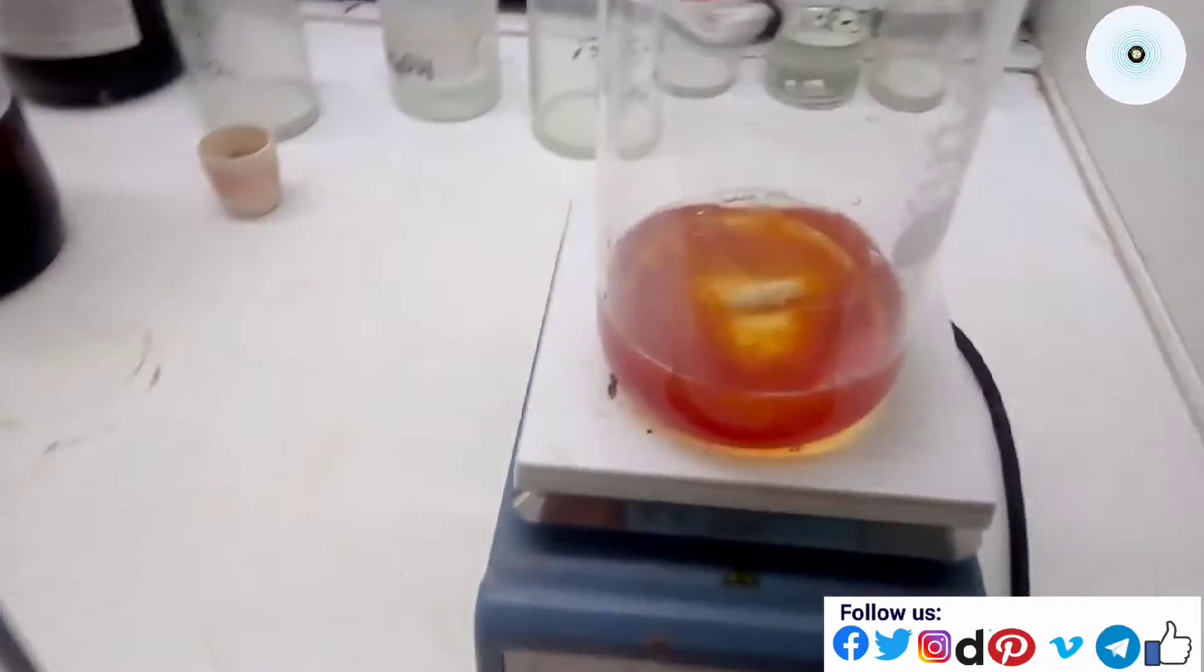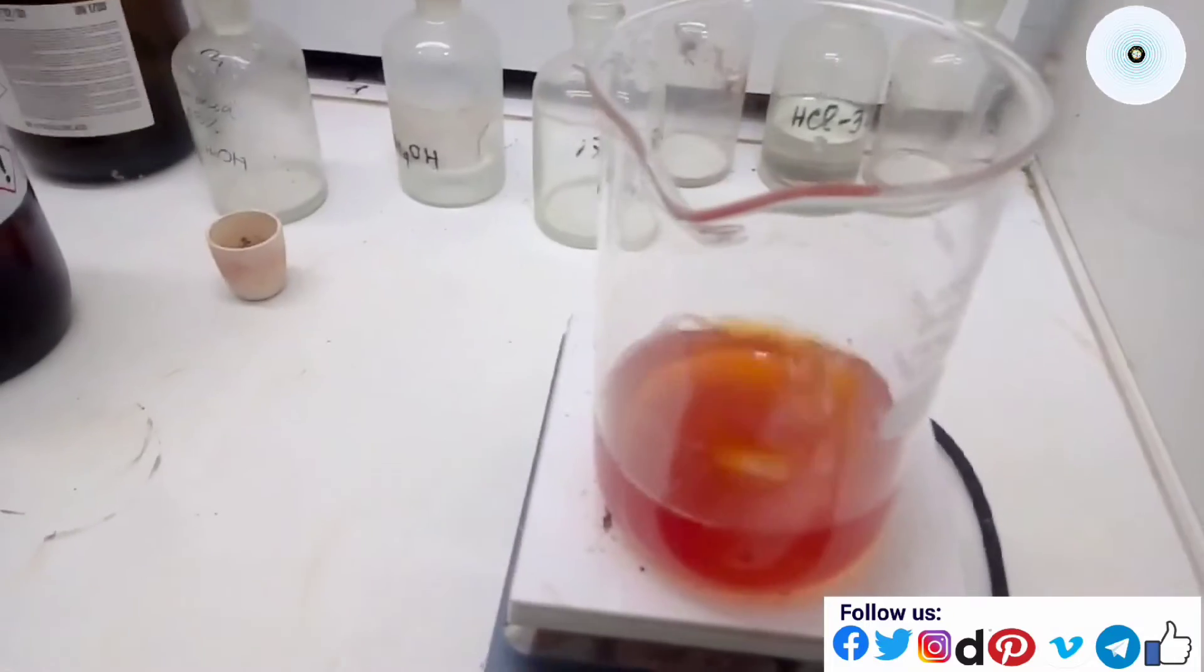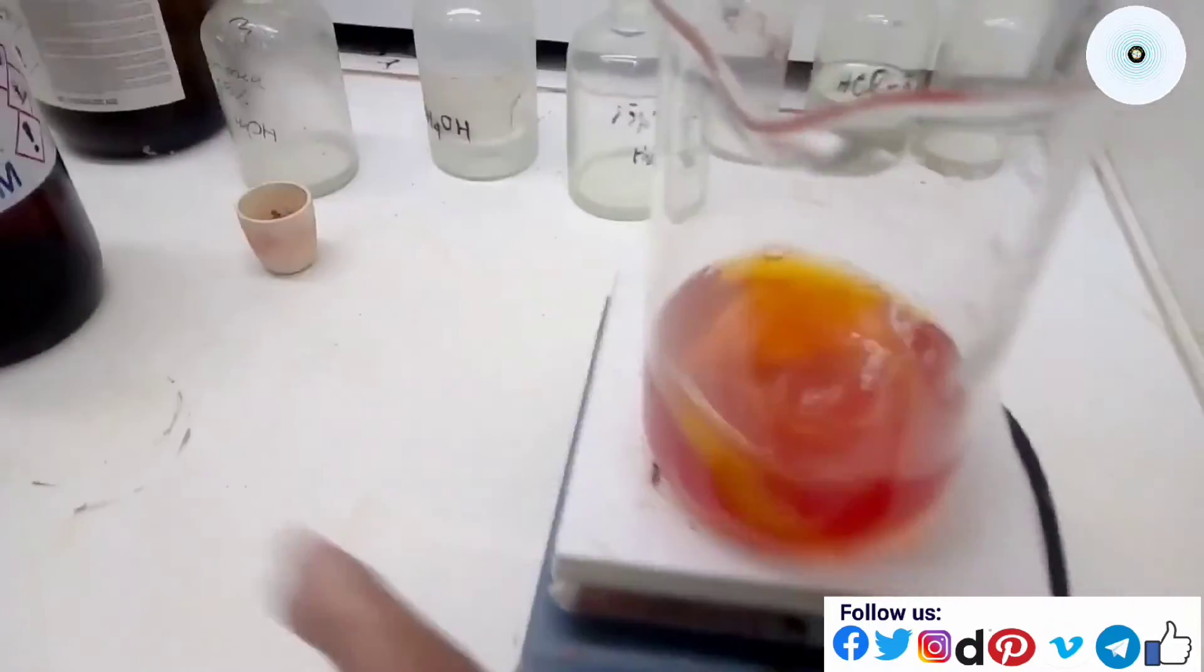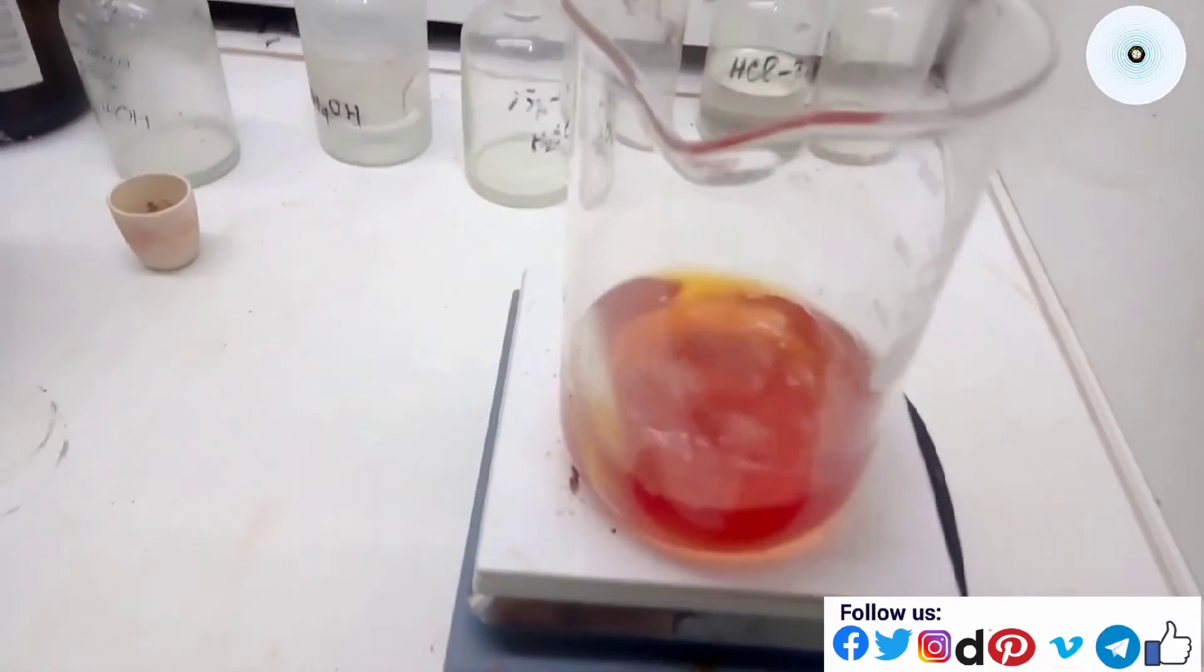First step, switch on the magnetic stirrer and set temperature at 85 degrees Celsius. Put the ferrite nitrate on the magnetic stirrer with magnet and stir it.